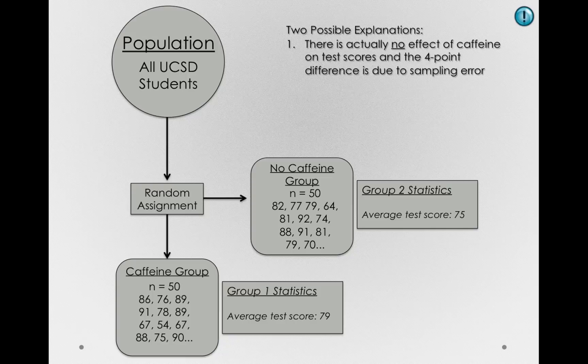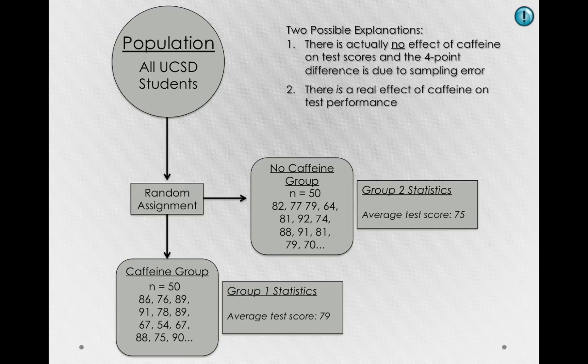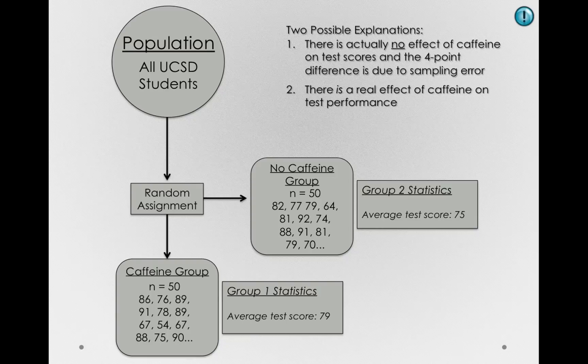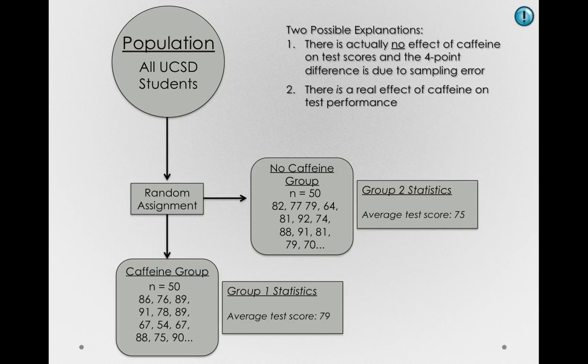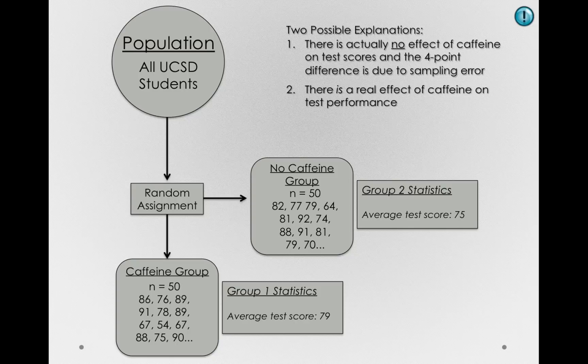Now, a second possible explanation, and probably the one that we want to be true if we're doing this study, is that there is a real effect of caffeine on test performance. Now, this four-point difference won't be due just to the effect of caffeine. No matter what, we're going to have sampling error. So in the second possible explanation, we're actually saying that there is a real effect of caffeine, and we've observed some sampling error. But in explanation two, we're adding an explanatory unit. We're saying that caffeine has some effect in the world.